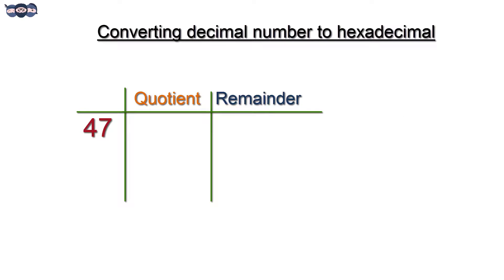Consider the number 47. The number 47 on division by 16 produces 2 as quotient with 15 as remainder. The 2 on further division produces 0 as quotient with 2 as remainder.